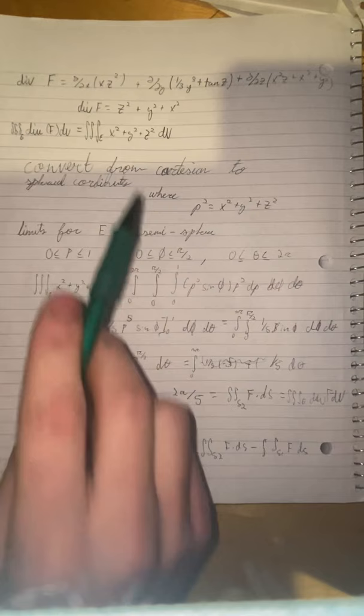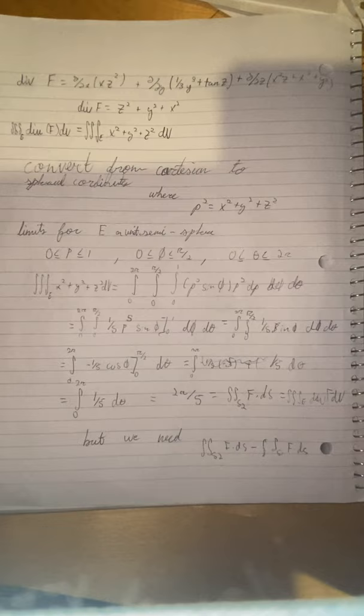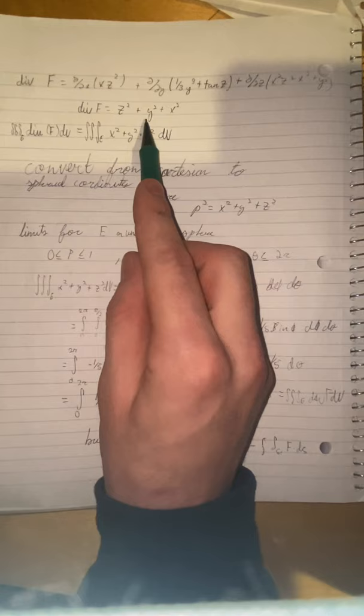Now we have to solve for div f, which is equal to the partial of x of xz squared plus partial y of one third y cubed plus tangent z plus partial z of x squared z plus x squared plus y squared. And this can come out really nicely as div f equals z squared plus y squared plus x squared.